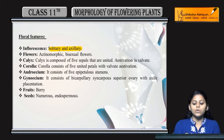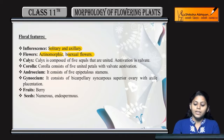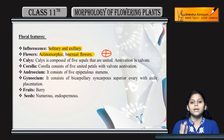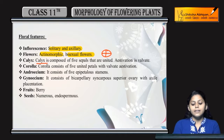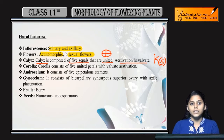Floral features: inflorescence is solitary and axillary. Flowers are actinomorphic and bisexual, meaning both male and female parts are in the same flower. Actinomorphic means if you cut from any plane through the central axis, it gives equal halves. Calyx: five sepals present, united, meaning gamosepalous. Estivation is valvate.